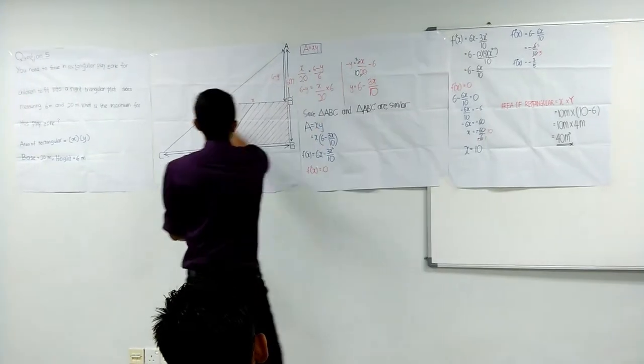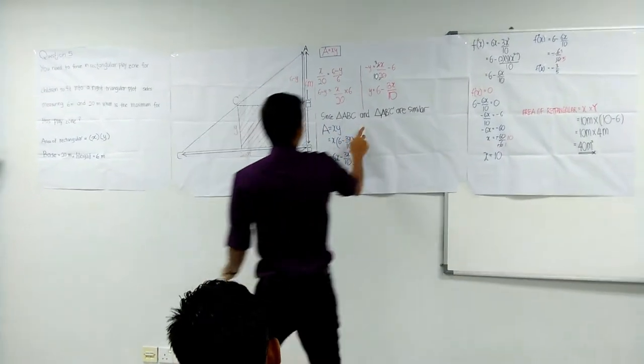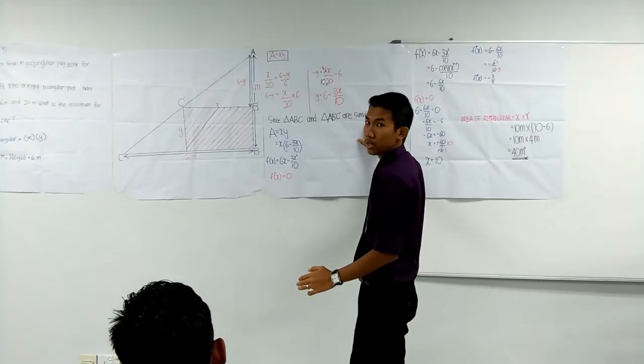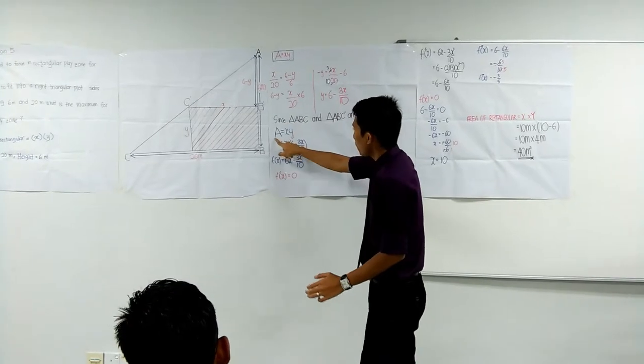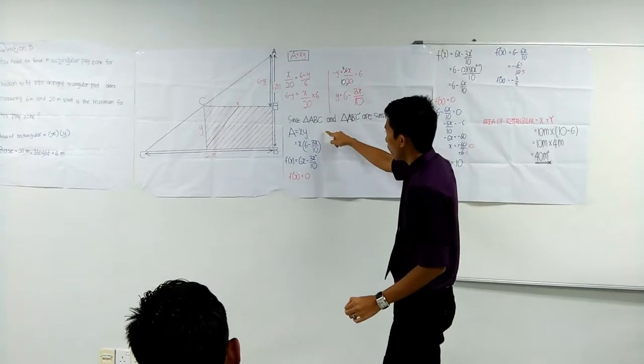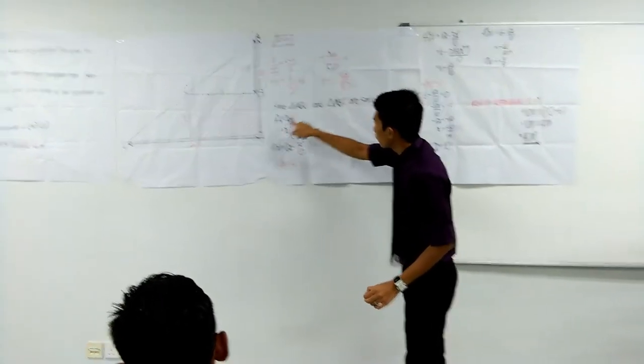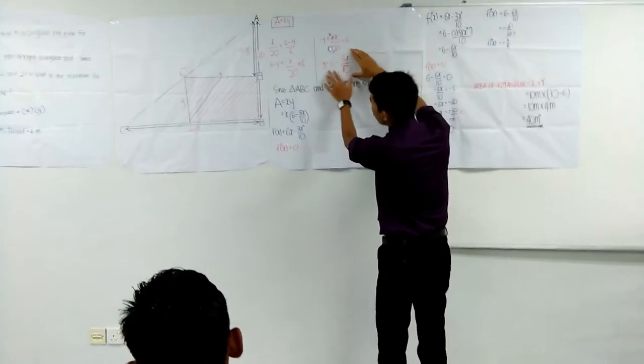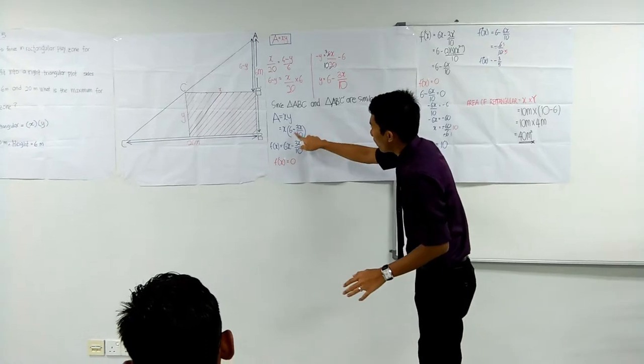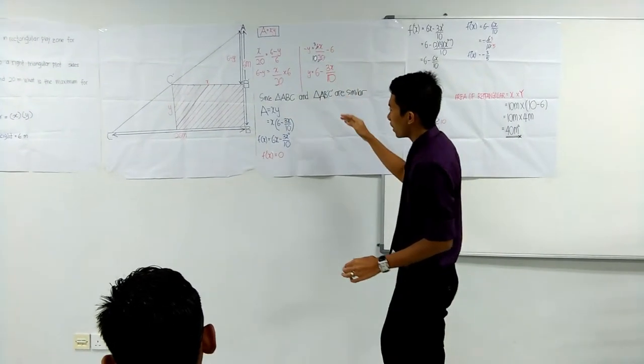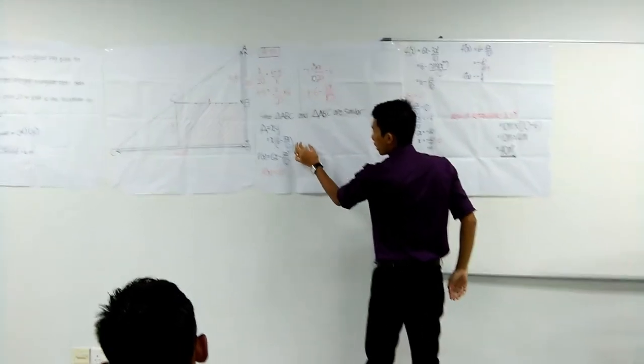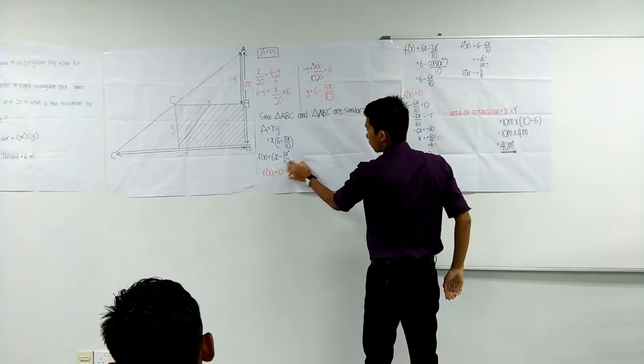Since the triangles are similar, we got the area. We write it with A equal to X times Y. And then Y we already get, so we just plug it into the Y. X multiplied by 6 minus 3X divided by 10. So A is 6X minus 3X power 2 divided by 10.